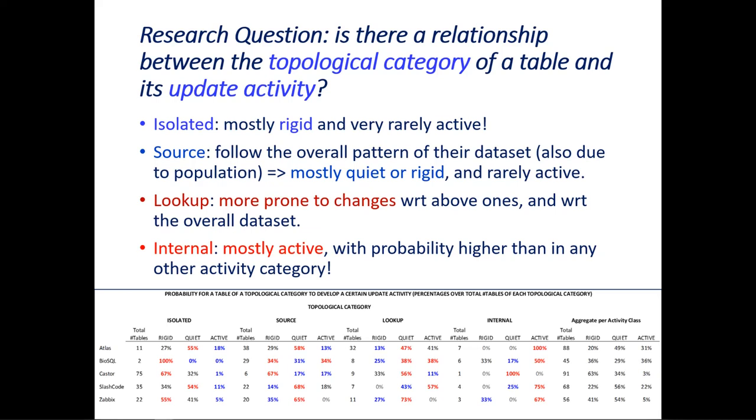So progressively, as you move from isolated on the left towards the internal on the right, you will see that the red numbers start to move from the rigid category towards the quiet and eventually towards the active, which means that isolated tables are mostly rigid. And then progressively, you have more and more quiet tables with few changes. And in the end, you have more active tables with lots of changes.